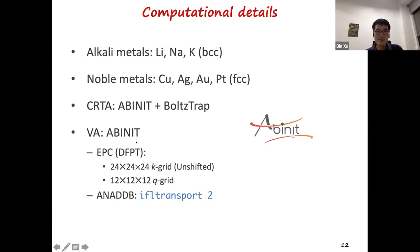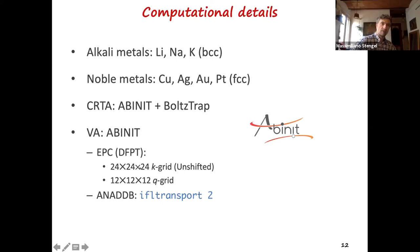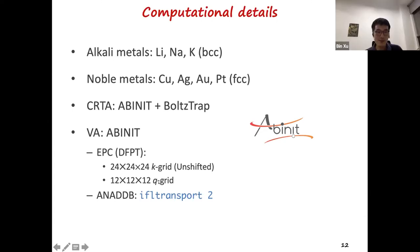And with this method, with these two methods for constant RTA, we actually combine ABINIT with BoltzTraP codes to get the Seebeck coefficient. For the variational approach, everything was done by ABINIT. And for electron-phonon coupling calculation, we use the 24 by 24 by 24 k-grid and the 12 by 12 by 12 q-grid. And they ensure the good convergence. And the transport calculation is done by feeding the input to ANADDB by setting the input variable eph_transport being equal to two.